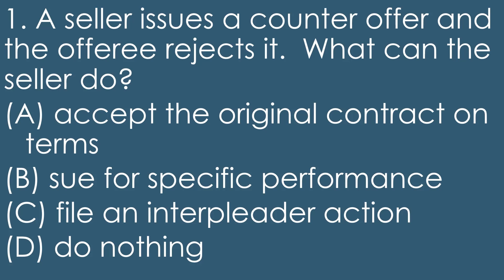They sent a counteroffer, which is a new offer. Now the buyer rejected it. So at this point, the seller could try to send a new offer to see if they can find a happy medium, but there's really not much they can do. The best answer is D, do nothing. They can't go back and accept the original contract on terms — they rejected it by sending a counteroffer. They can't sue for specific performance because there wasn't a contract. File an interpleader action? No, that would be if they were in escrow and somebody breached the contract. So the best answer is D, do nothing.